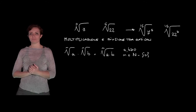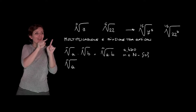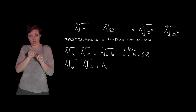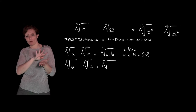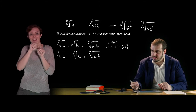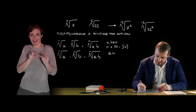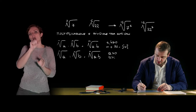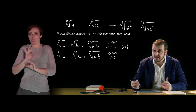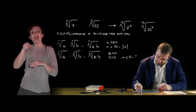Analogously for division of radicals with the same index: the nth root of A divided by the nth root of B equals the nth root of A divided by B — a radical with the same index and whose radicand is the quotient of the radicands. The conditions are A ≥ 0, B > 0 (not zero, otherwise the expression is undefined), and n ∈ ℕ \ {0}.